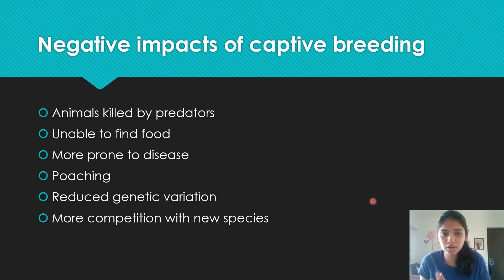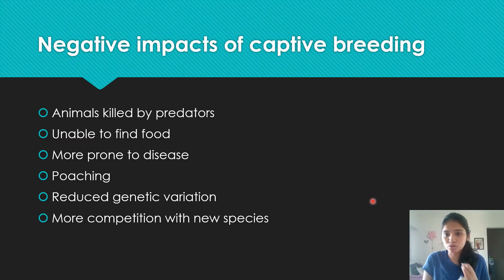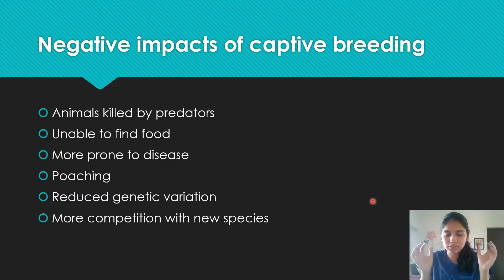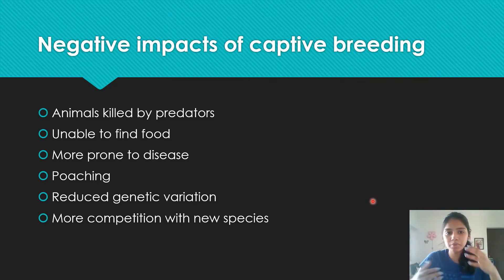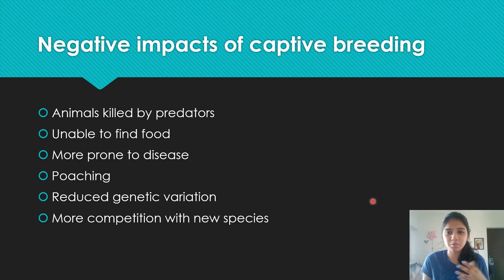After captive breeding, when animals are released, they may be so accustomed to being provided for that they find it hard to survive on their own — they become unable to find food because they don't know how to forage. They can be poached, are more prone to diseases, and there's reduced genetic variation because only a limited number of organisms are breeding together. If new species are introduced, increased competition defeats the purpose of captive breeding.